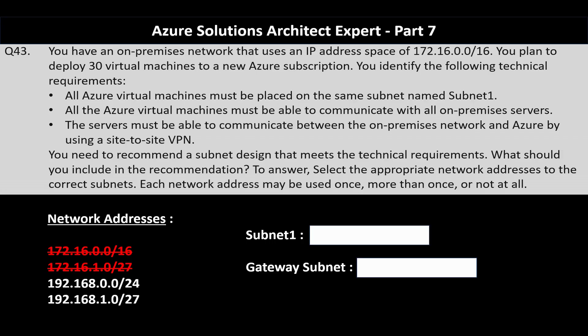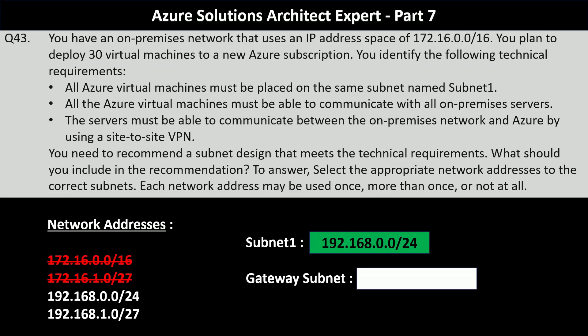You need to deploy a total of 30 virtual machines. The first remaining CIDR range with a prefix of 24 will have 256 IP addresses, and the second one will have 32 IP addresses. Remember, Azure reserves five IP addresses in each range for internal purposes, which leaves us with only 27 IP addresses in the CIDR with a 27 prefix. That means the correct answer for the subnet is 192.168.0.0 with a prefix of 24. The gateway subnet would be 192.168.1.0 with a prefix of 27, because it ensures the gateway subnet is separate from the Azure VM subnet and does not overlap with the on-premise IP address space.